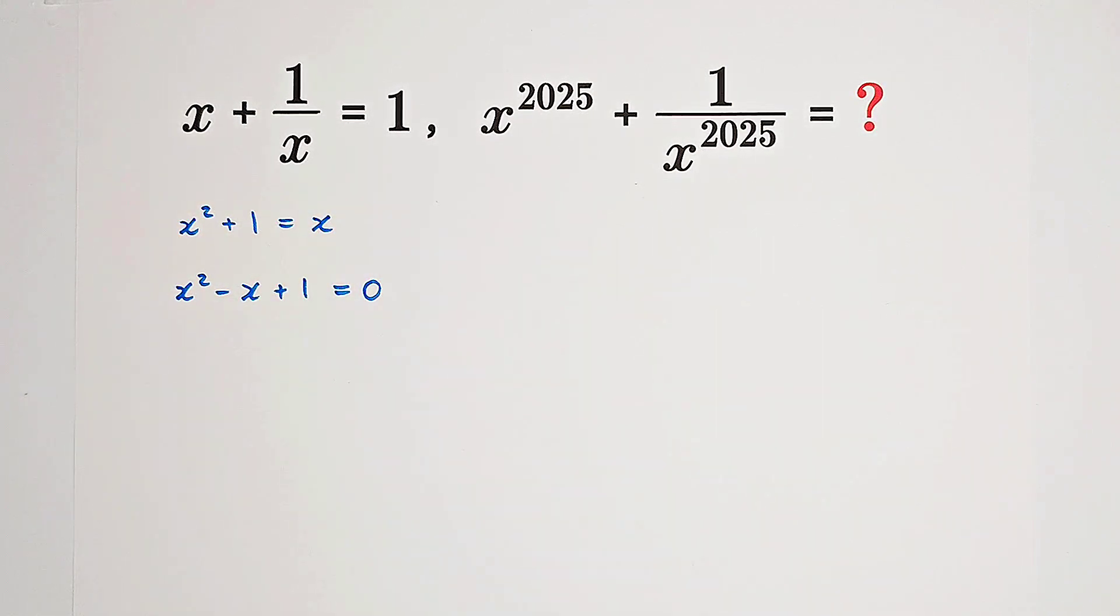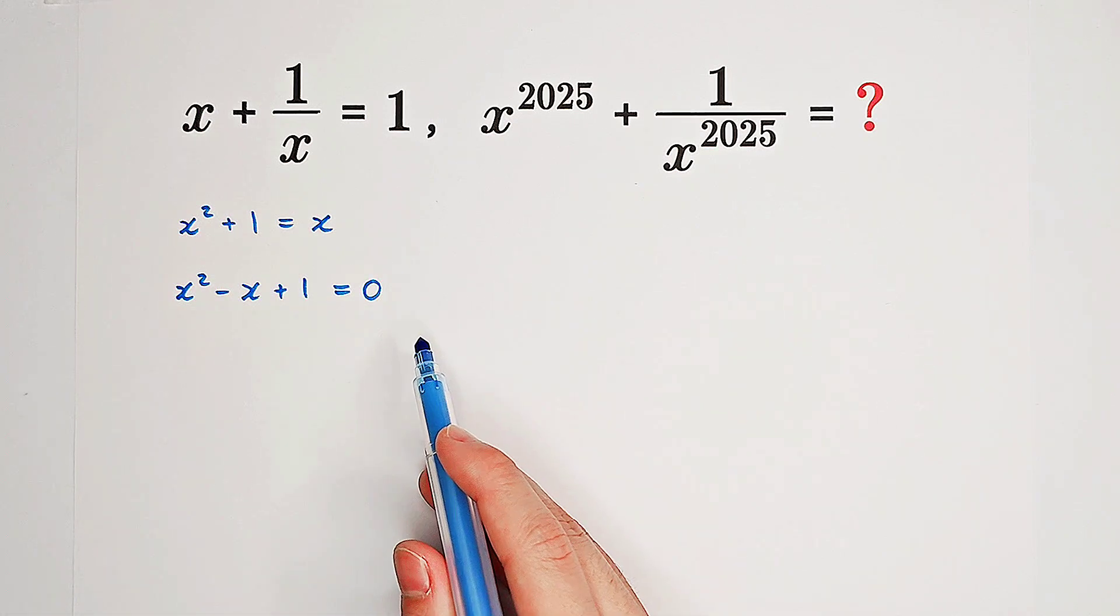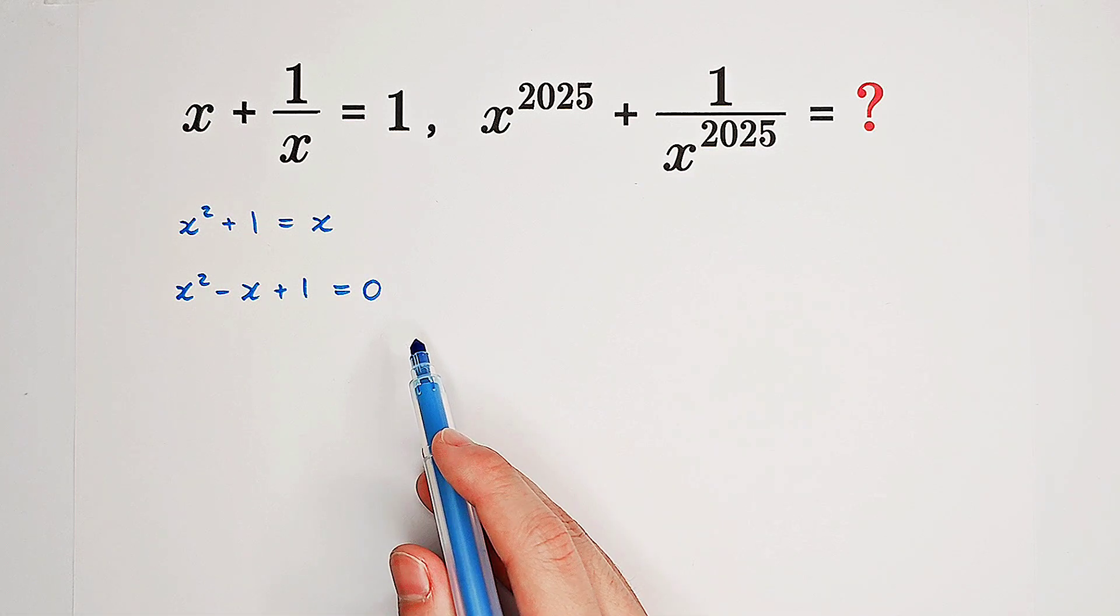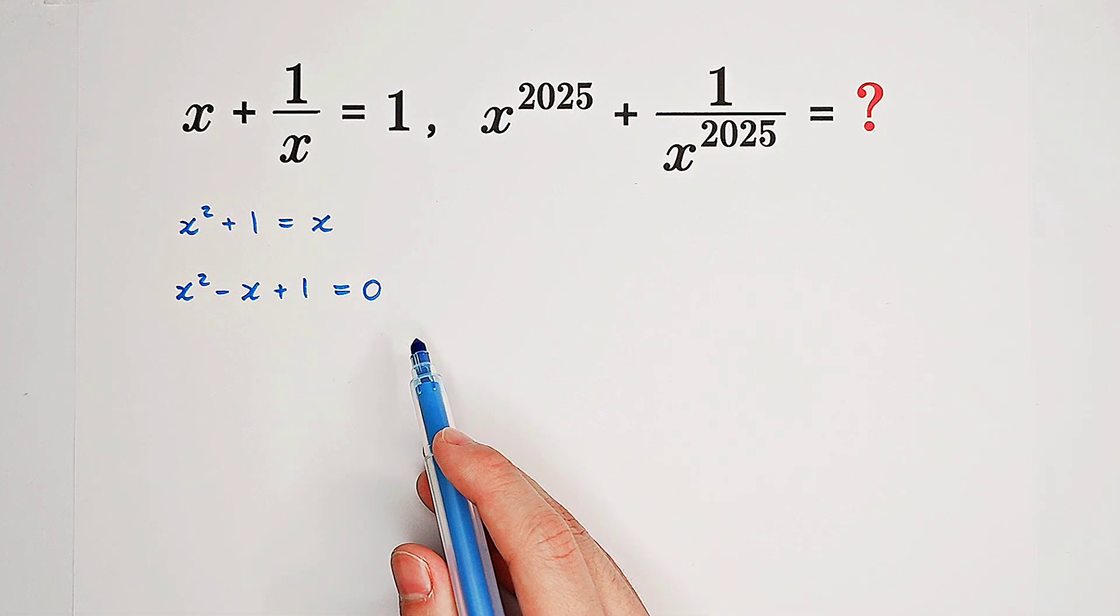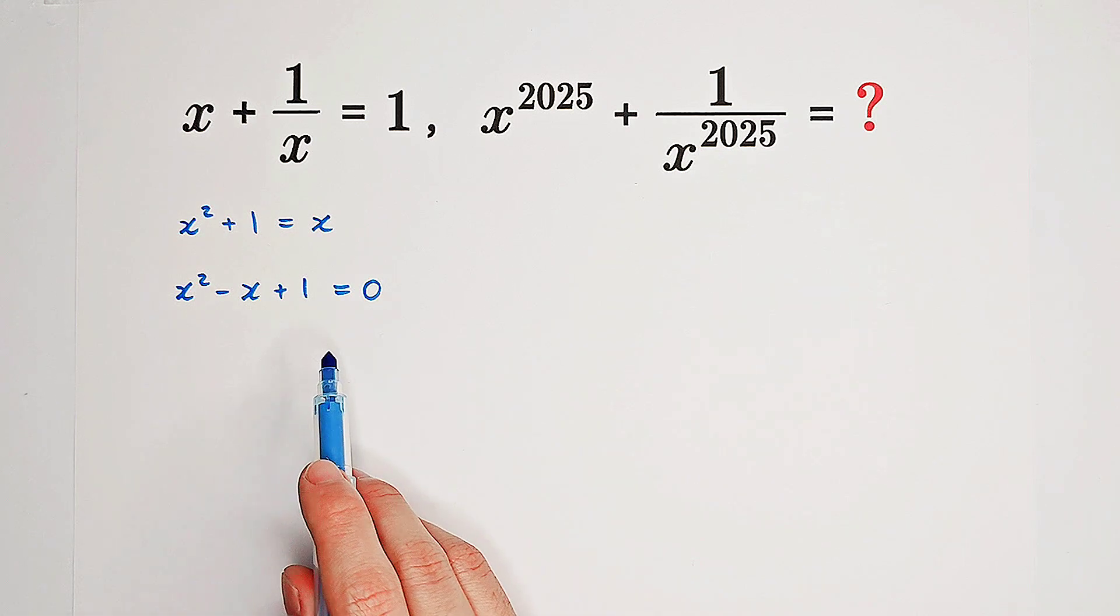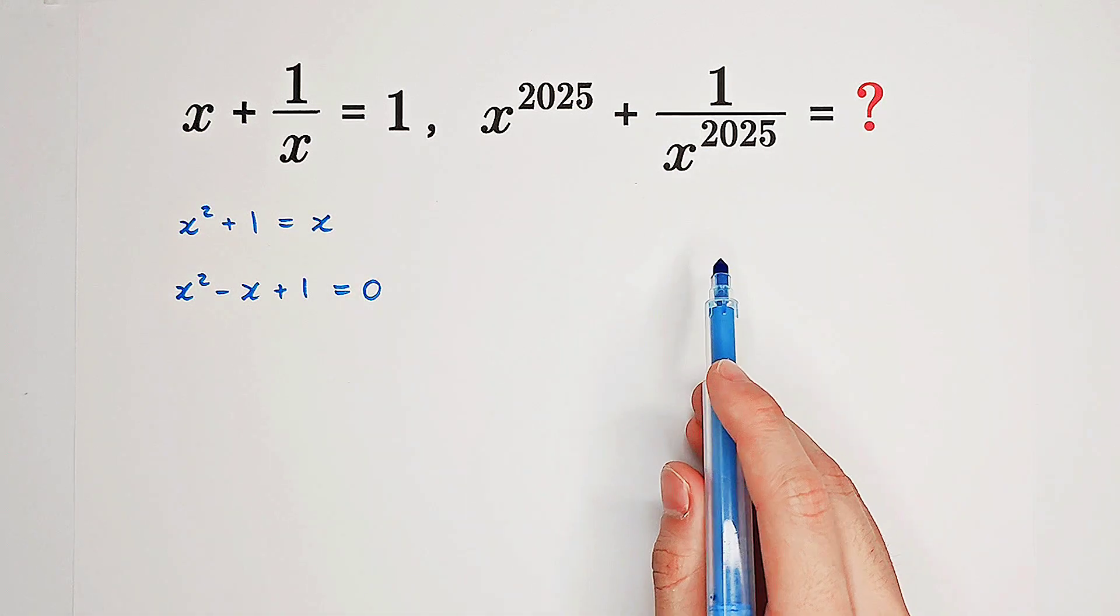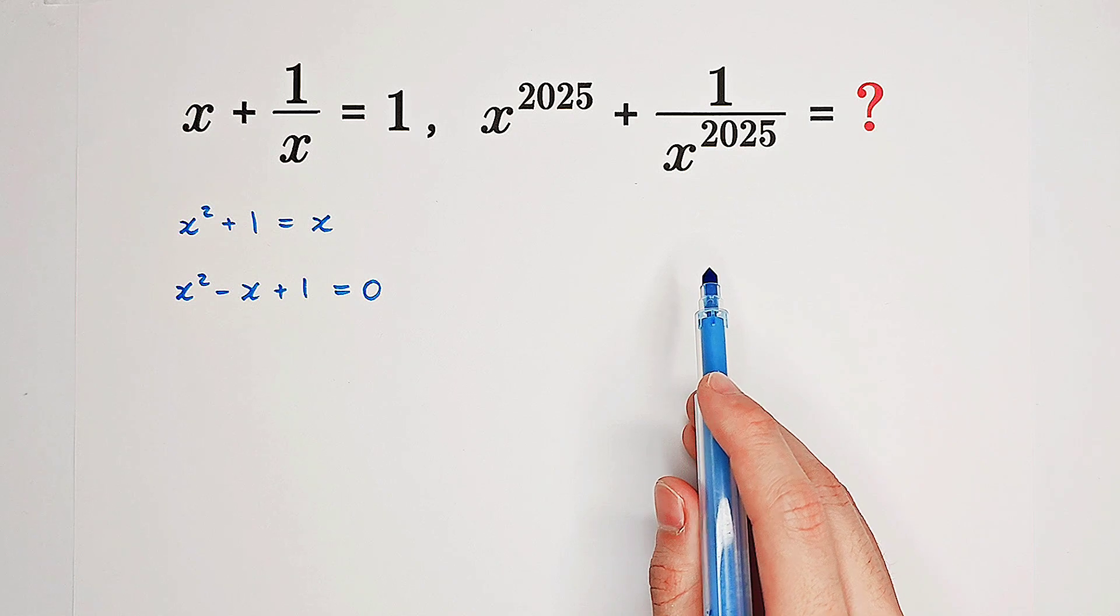Now, maybe your idea is, firstly, we solve for x, and there are indeed two solutions to this equation. And then substitute them into this term, and then we get the value. It might also be a right way, however not efficient.